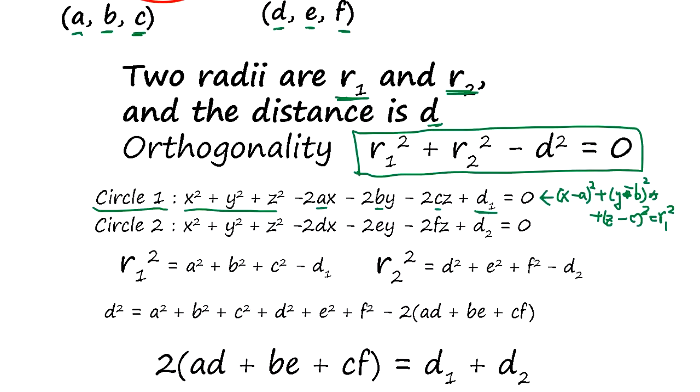you will get this one. But D1 will be something like A square plus B square plus C square minus R1 square. That's going to be D1.